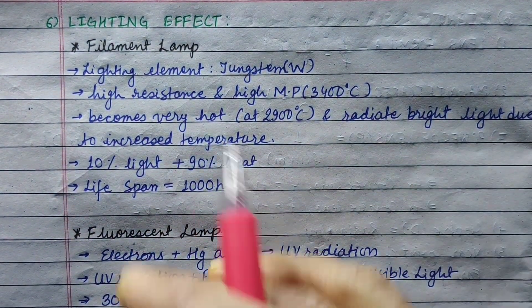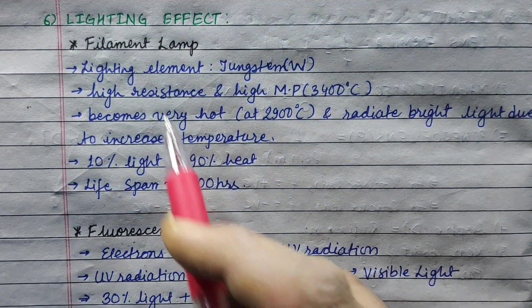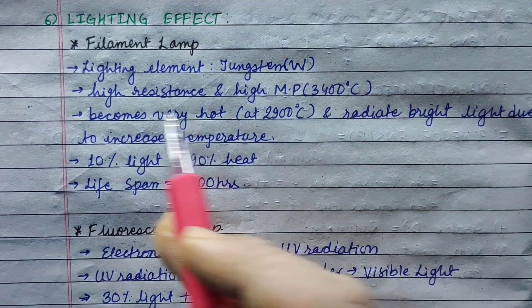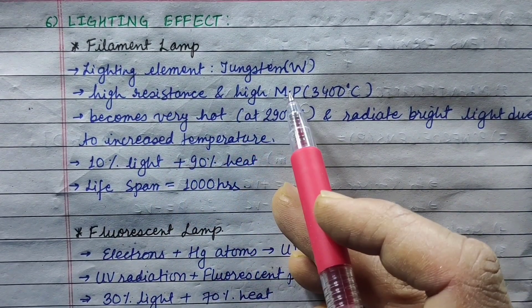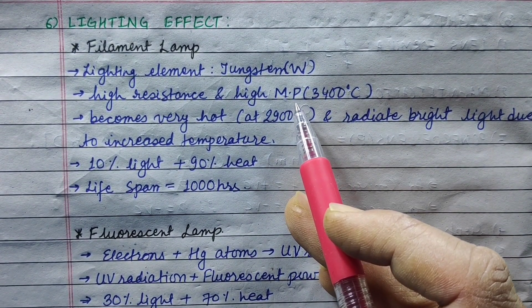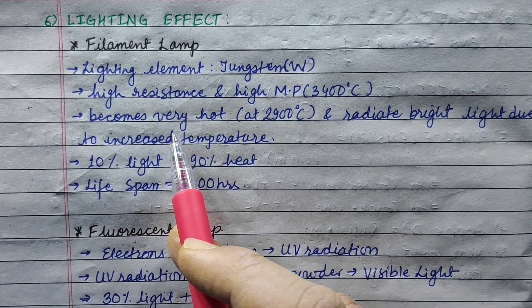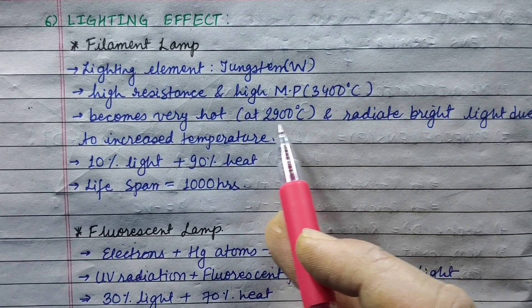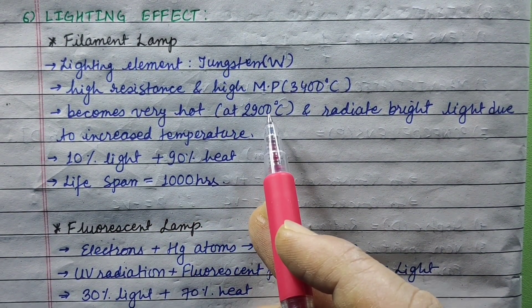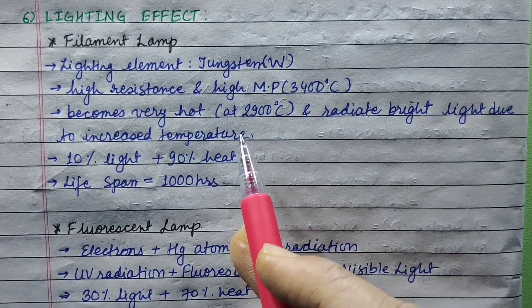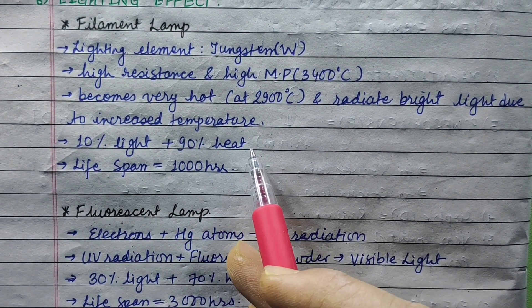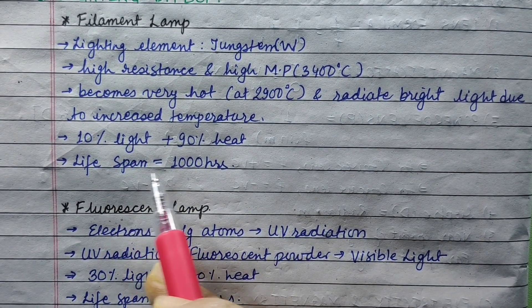For lighting effect, filament lamp uses tungsten or wolfram as the lighting element because of its high resistance and high melting point. It becomes very hot at 2900 degrees Celsius and radiates bright light due to increased temperature. However, it is less efficient, producing 10% light and 90% heat, with a lifespan of less than 1000 hours.